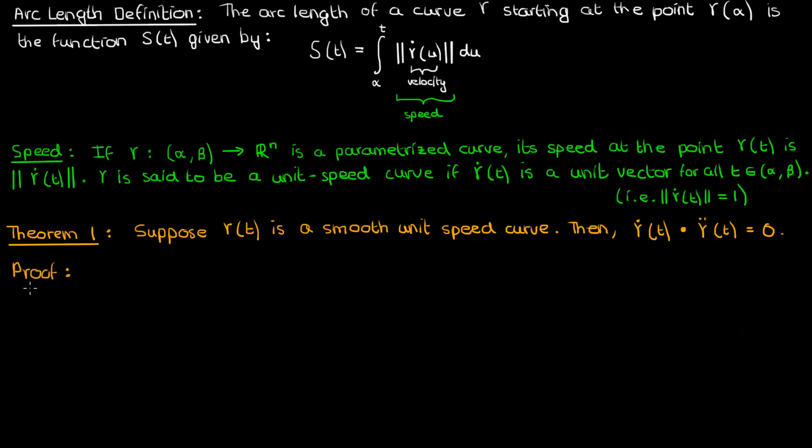The proof of this theorem is pretty trivial. If γ is a unit speed curve, then it should make sense that the magnitude of the velocity γ̇ is 1. This is just the definition of the unit speed curve. This means that the magnitude squared must also be 1.